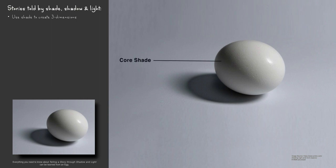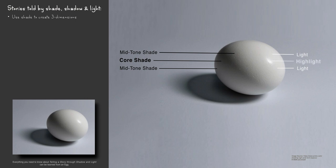The darkest core shading curves around the egg in an elliptical pathway, with mid-tone shading on both sides of the core shading. Closest to the light source, the mid-tone shade becomes light, with a bright highlight appearing near the middle. The lowest edge of the egg is illuminated with reflected light from the tabletop. The projected shadow of the egg is darkest immediately under the egg.